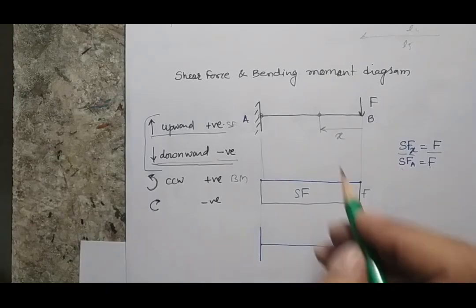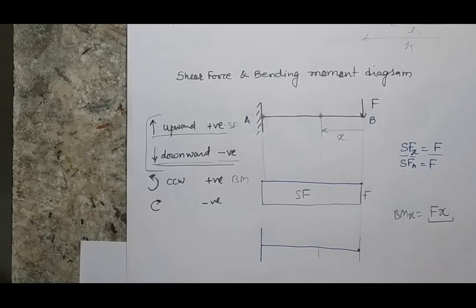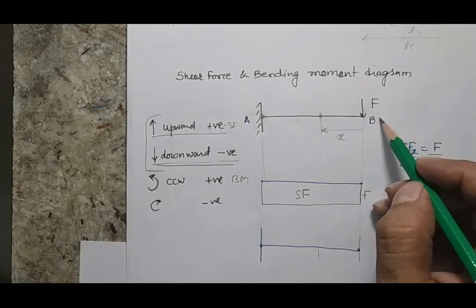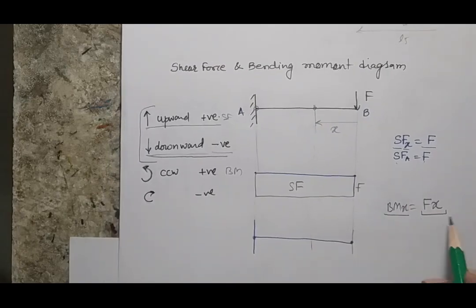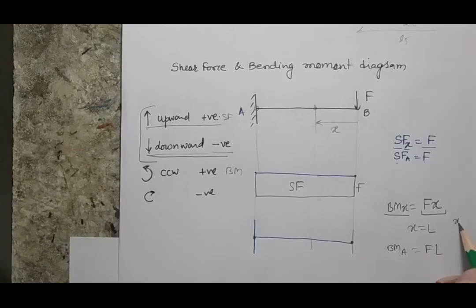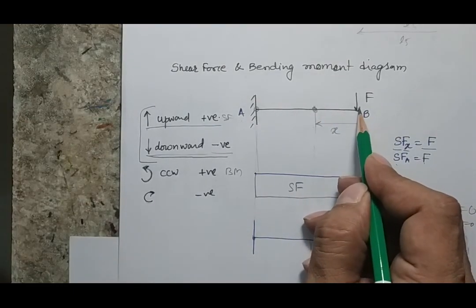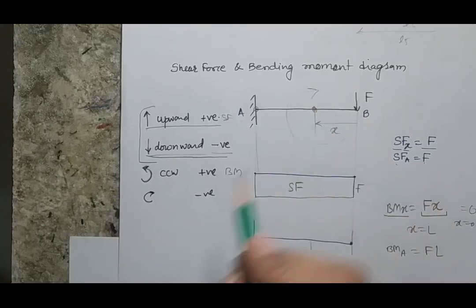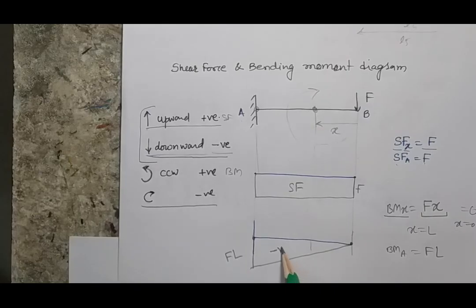For the bending moment: the force F acts downward and I find the bending moment at distance x, which is F × x. This formula is valid till the fixed end. Sometimes with multiple forces, we need separate equations for each section — we'll see that in the next lecture. Here, the bending moment is Fx, zero at x = 0 and equal to F × L at the fixed end. Since the bending moment direction is clockwise, it is negative. So the bending moment diagram is linearly increasing in the negative direction, from 0 to −FL.